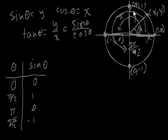When we go all the way around the circle to 2 pi radians, we're back at this point again, so sine of theta is 0 once again. Let's graph these points out, and then we'll figure out what the points in between look like.